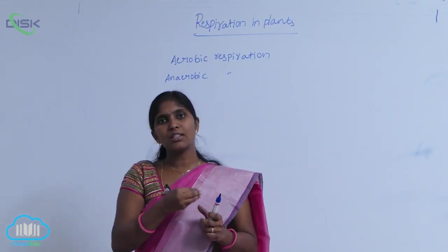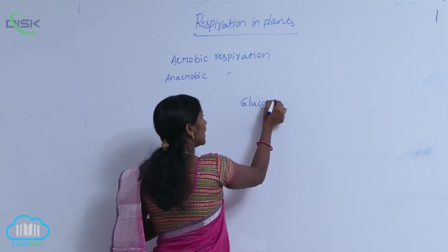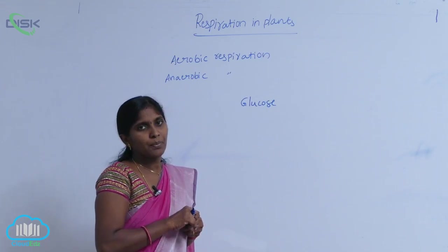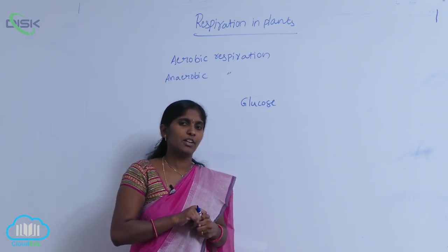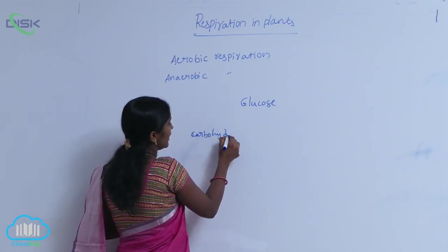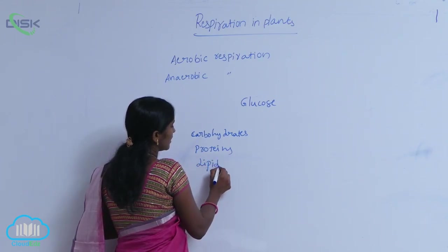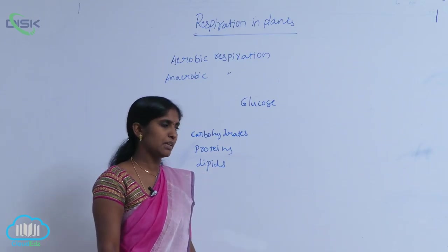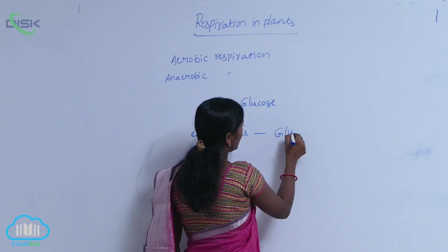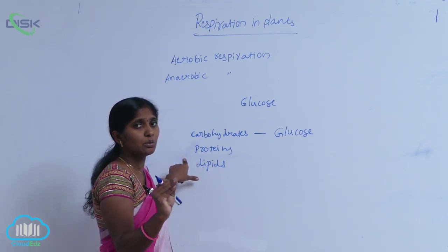The basic source of food for respiration is glucose. The glucose basically comes from photosynthesis. But in animals, the respiratory substrates are different, and even in plants they are also different. The respiratory substances are carbohydrates, proteins, and lipids. All types of respiratory substances do not involve directly in respiration.